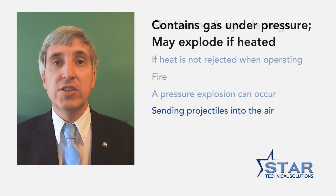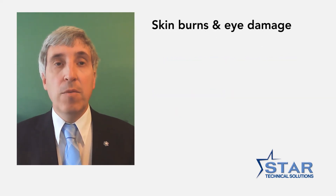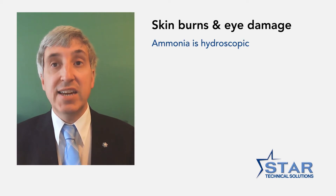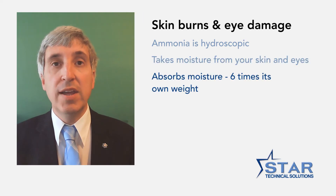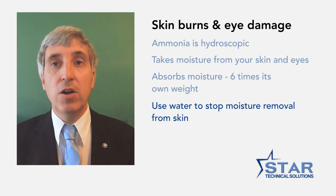The fourth hazard associated with ammonia is skin burns and eye damage. Ammonia is hygroscopic and therefore if ammonia is released, it seeks out moisture. When ammonia liquid is in contact with human tissue like skin and eyes, it draws the moisture from the human tissue as it consumes six times its own weight in moisture. The only treatment is water — lots of water and then more water. Flushing the burn with water gives the ammonia an easier source of moisture to seek out, pulling it away from the human tissue.